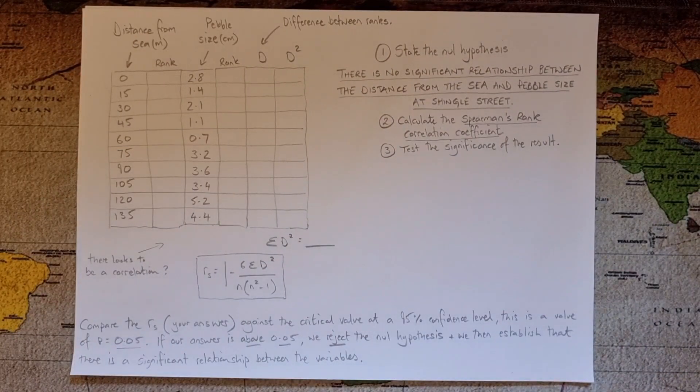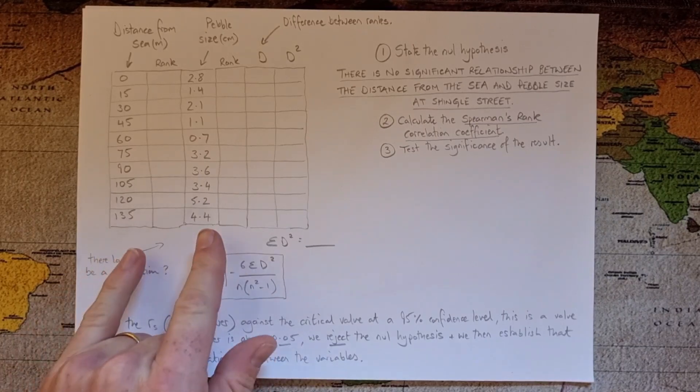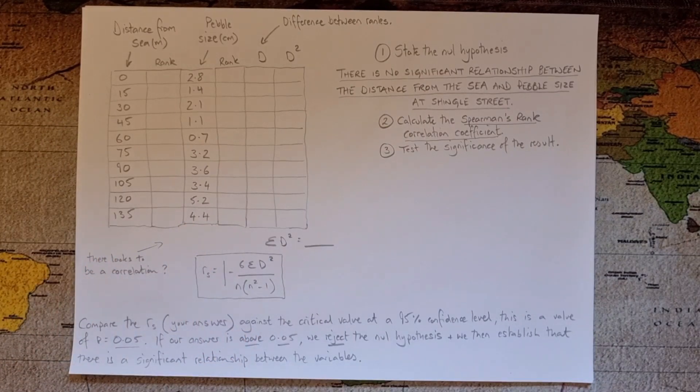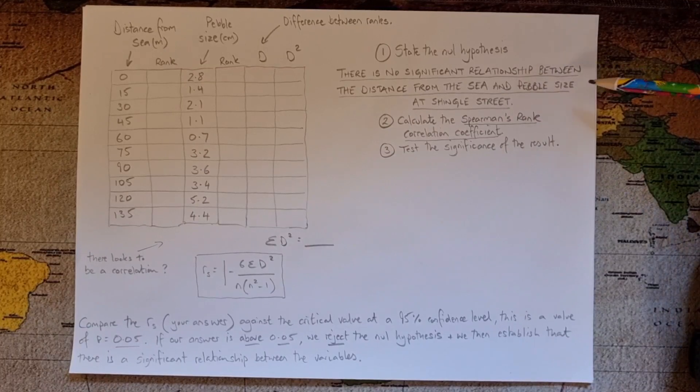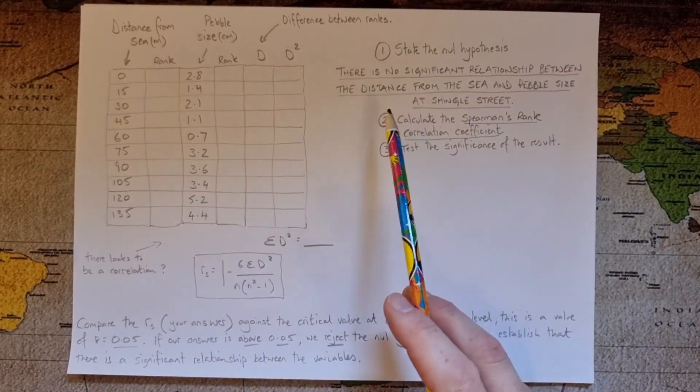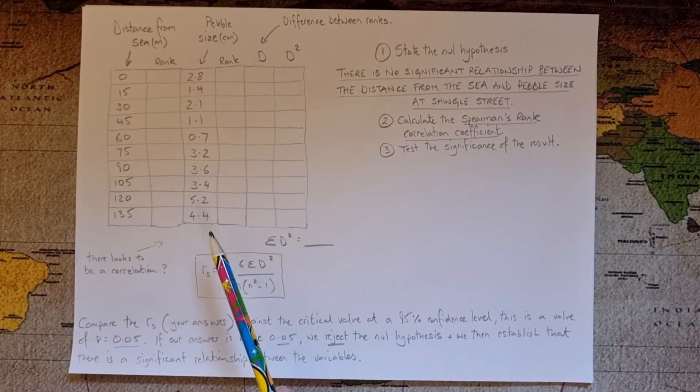Okay hello, I'm back from the beach for part two of this video. So this is a Spearman's rank correlation we're going to do on some of this data. Now a Spearman's rank correlation is a statistical test to see whether there is a significant relationship between two sets of data. We need at least 10 pairs which I've done here. Preferably we would use more but for the purposes of this demonstration we'll just use 10. Now this is a three-stage process. First of all we need to state a null hypothesis and that's written here: that there is no significant relationship between the distance from the sea and the pebble size at Shingle Street.